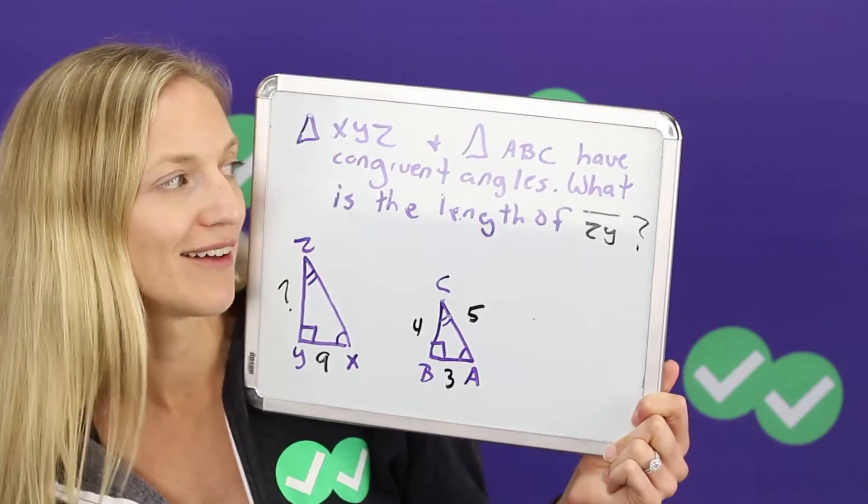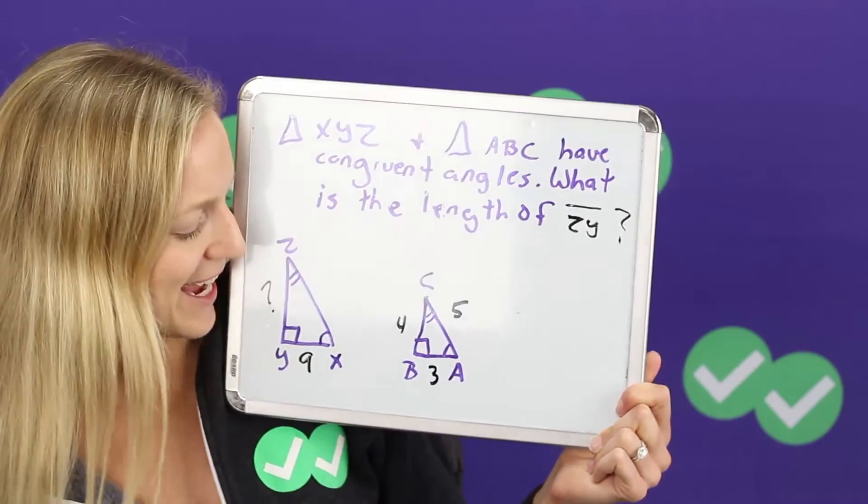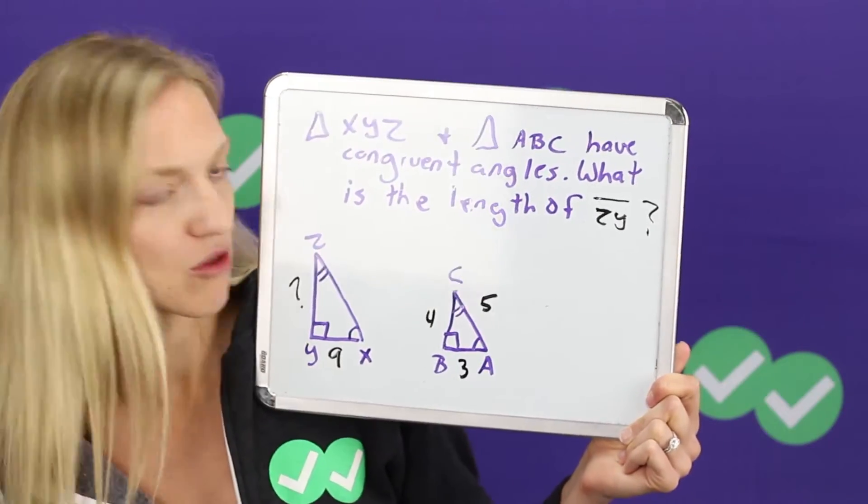Triangle XYZ and triangle ABC have congruent angles. Now we know we're talking about similar triangles. What is the length of ZY? So this length right here.